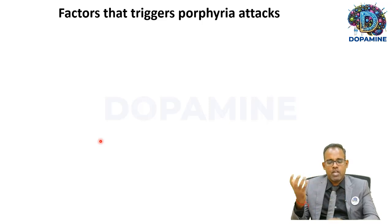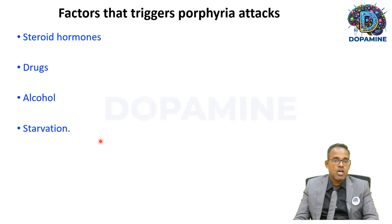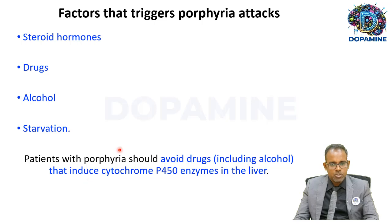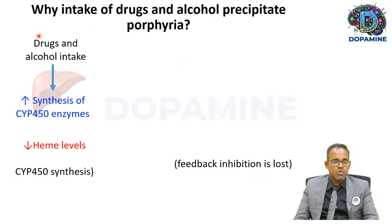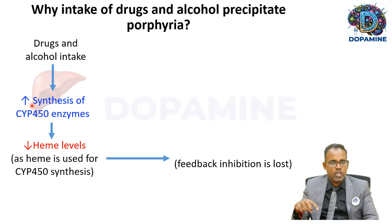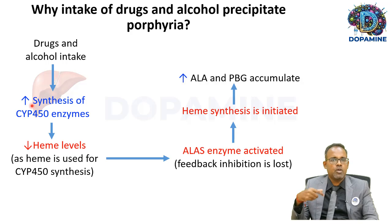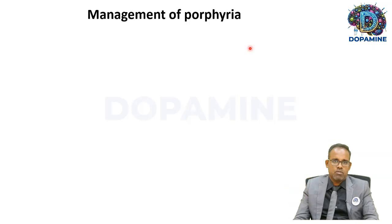Porphyria attacks are triggered by certain factors: steroidal hormones, drugs, alcohol, and starvation. Patients should avoid drugs that induce cytochrome P450 enzymes in the liver, because when such drugs are metabolized, P450 enzyme synthesis increases, consuming more heme. Heme levels fall, feedback inhibition on ALA synthase is lost, ALA synthase is activated, and ALA and PBG accumulate again causing clinical features.